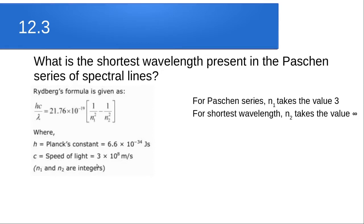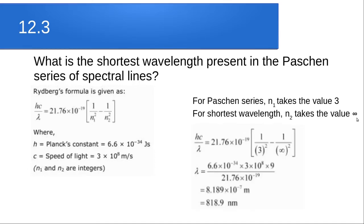For the Paschen series, n₁ = 3. For the shortest wavelength, the electron jumps from the highest orbit possible, which is infinity, so n₂ = ∞. Substituting into the equation, we get hc/λ = 21.76 × 10⁻¹⁹ × (1/3² − 1/∞²). Simplifying, we get the answer as 818.9 nanometers.